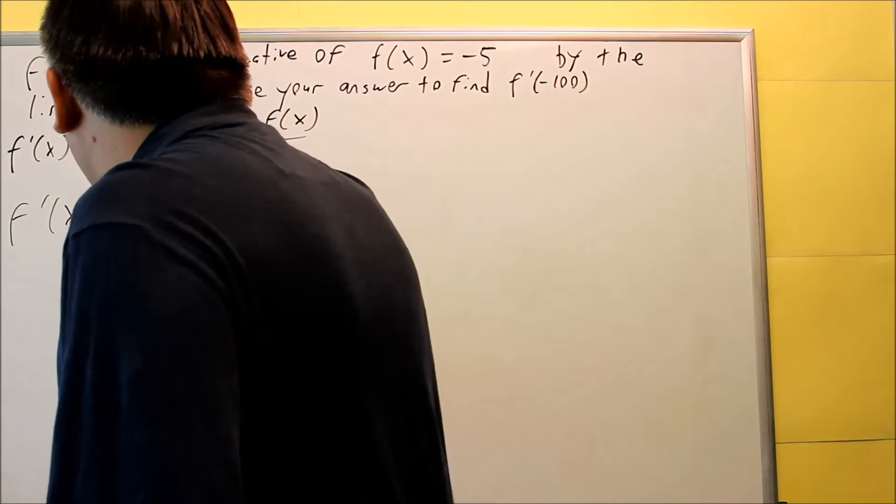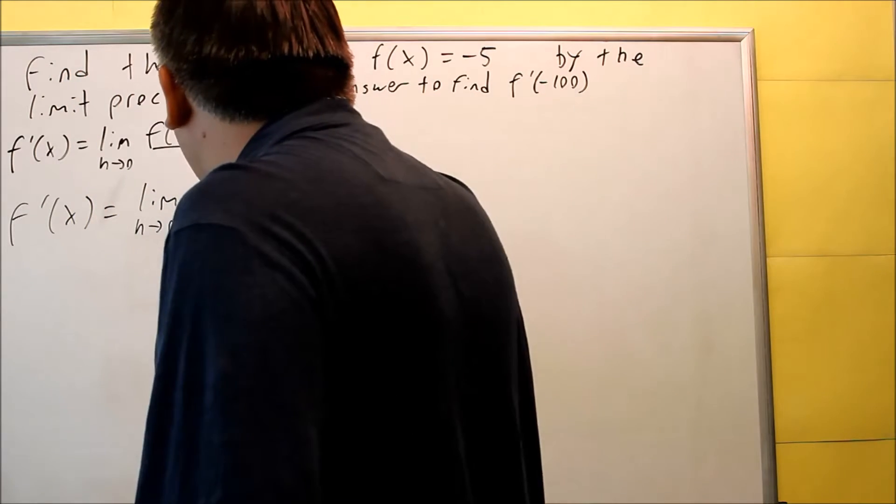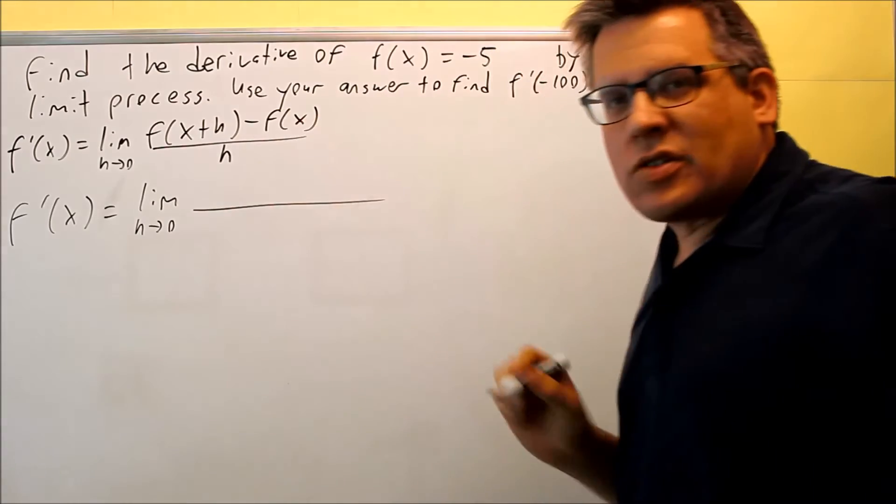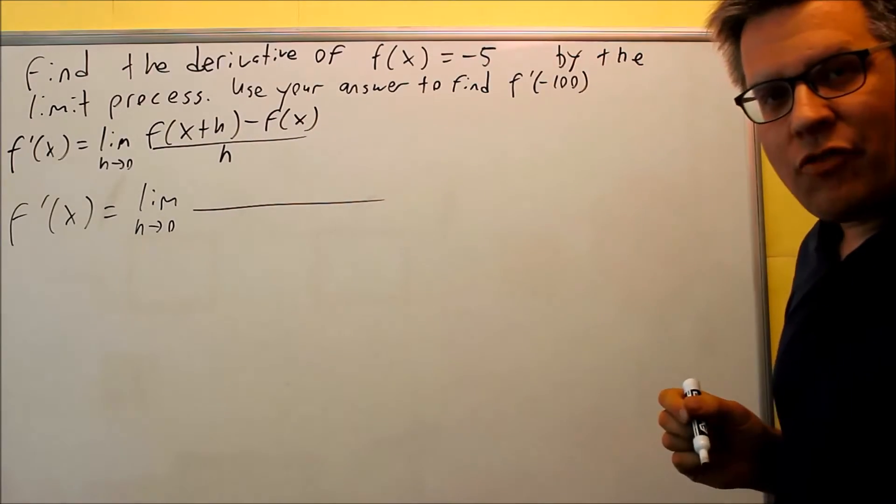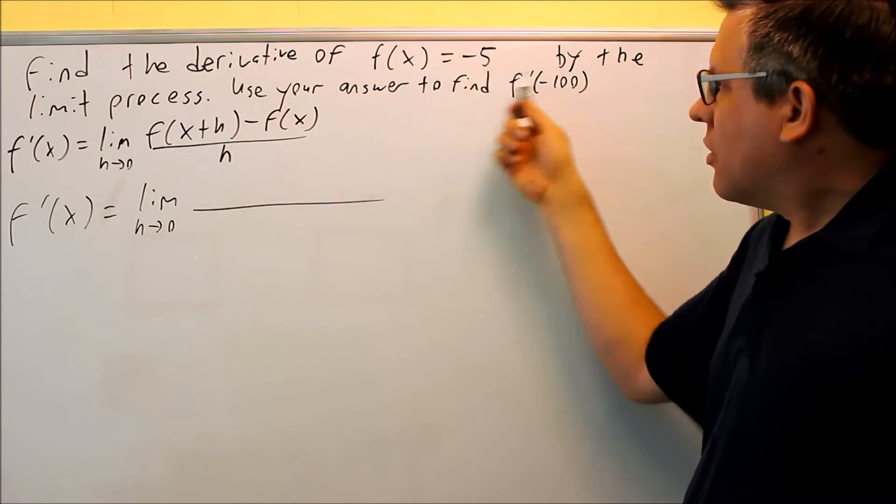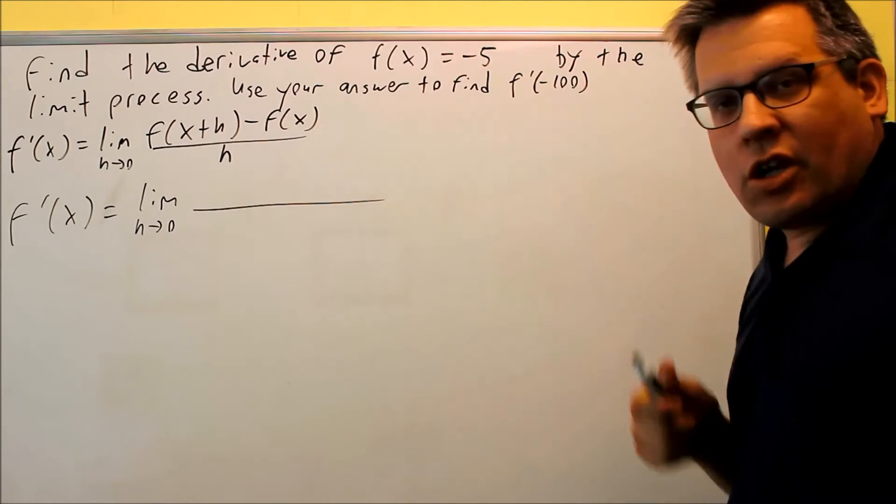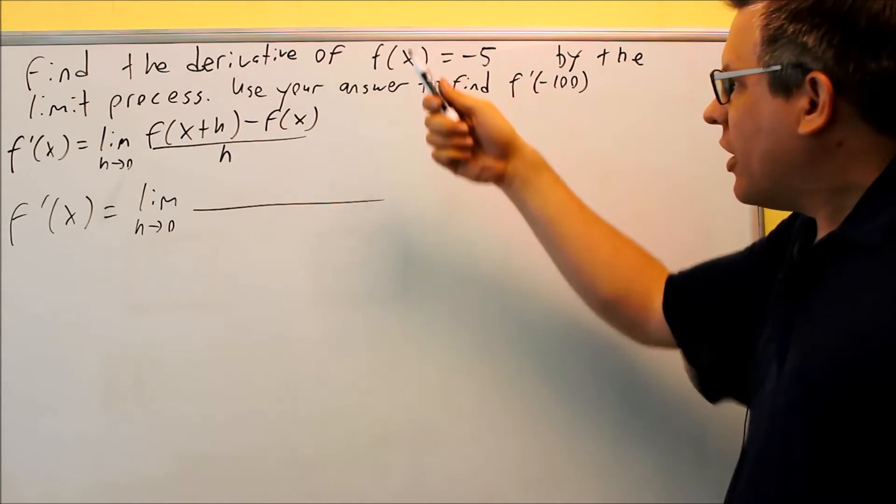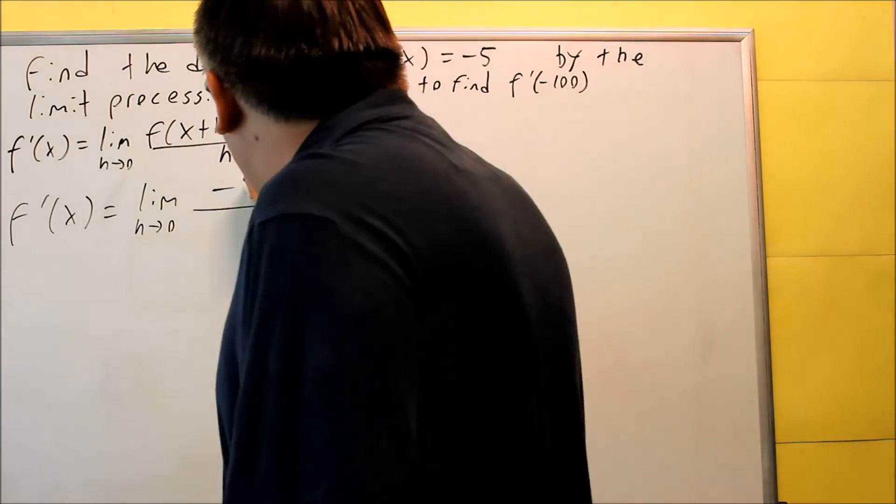Okay, so the derivative is equal to the limit as h goes to 0. Let's plug everything in. We're going to do f of x plus h. Now, our original function is just negative 5. If I put x plus h in here, there's no x to put that into, which means that I'm always going to get negative 5 no matter what. So any number, anything I put in there will always give me negative 5.